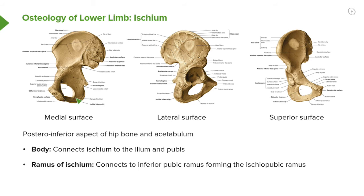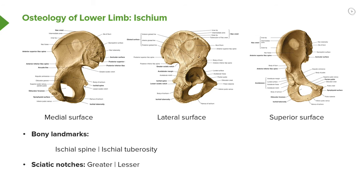We can also see it coming down here on this medial surface and running down here on this superior surface. It's also going to form the obturator foramen, which we can see as this large space here.